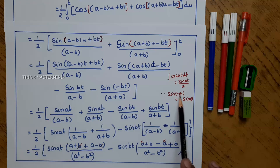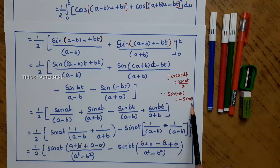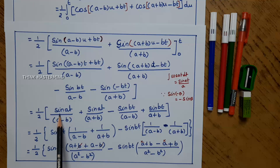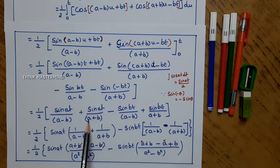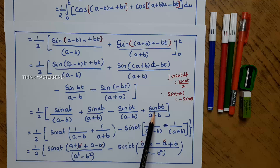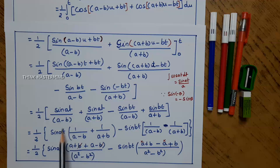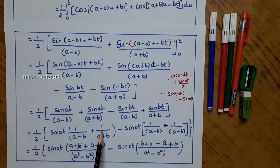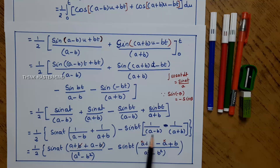We know that sin(minus θ) equals minus sin(θ). Simplifying the above equation, we get sin(at) divided by (a minus b) plus sin(at) divided by (a plus b) minus sin(bt) divided by (a minus b) plus sin(bt) divided by (a plus b). For simplification, take sin(at) as common: 1 divided by (a minus b) plus 1 divided by (a plus b), minus sin(bt) times 1 divided by (a minus b) minus 1 divided by (a plus b).